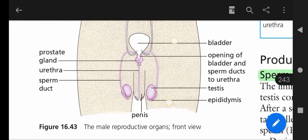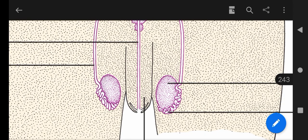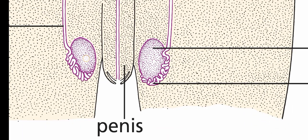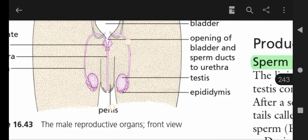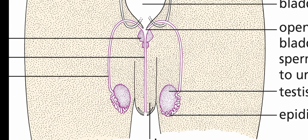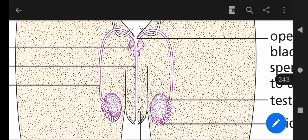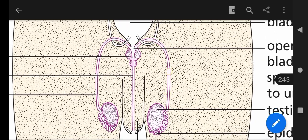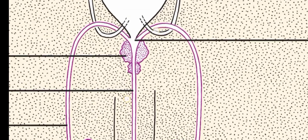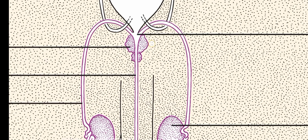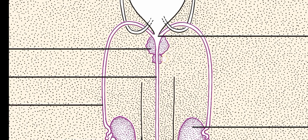The male reproductive system includes the testes — two in number — and the epididymis, which are tubules involved in sperm storage. After that, it connects to the sperm duct, and from there the sperm passes through different glands that add secretions to it, including the seminal vesicle and the prostate gland.